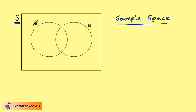In this context, using Venn diagrams for probability, A and B are termed events. And we'll use an example to explain exactly what this means.